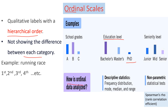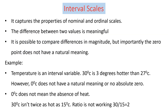For analyzing ordinal data using descriptive statistics, frequency distribution, mode, median, and range can be applied. Because of its qualitative nature, we apply non-parametric tests and cannot apply parametric tests. From inferential statistics, rank correlation can be used to analyze the ordinal scale.